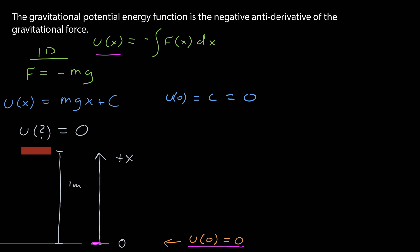That means U evaluated at zero is equal to zero. If I evaluate the potential energy at x equals zero, that's just C. If I say that's zero, then C is equal to zero. So my potential energy function is just mass times the acceleration due to gravity times x, which is the distance above the ground.